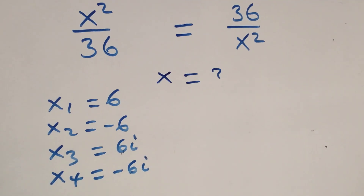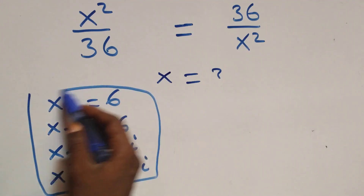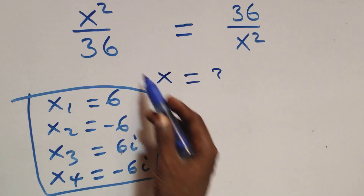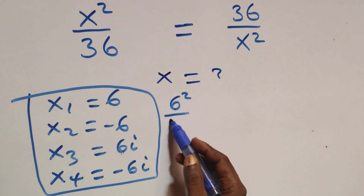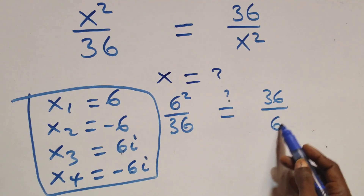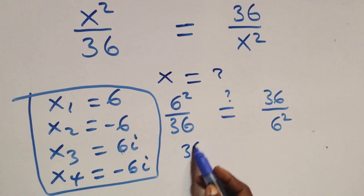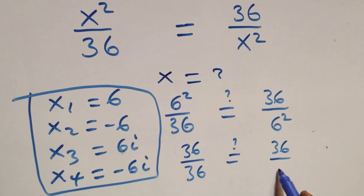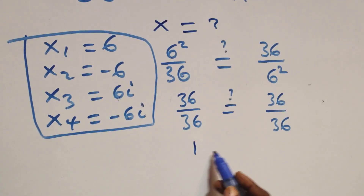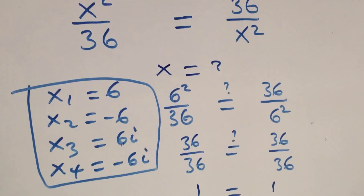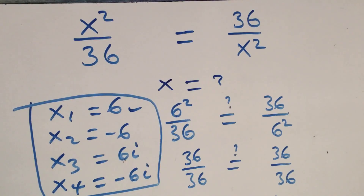Let's check if these satisfy the given problem. Substituting x = 6: the equation becomes 6² over 36, which is 36/36 = 1, and on the right-hand side we also have 36 over 6² = 36/36 = 1. Left-hand side equals right-hand side, so x = 6 satisfies the equation.